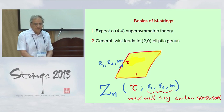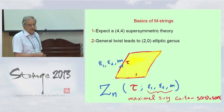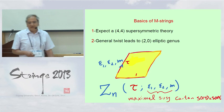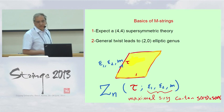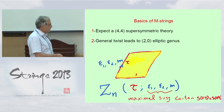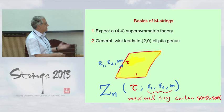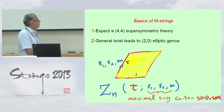So this is basically the computation. We use the topological vertex formalism, compute the answer, and the question is what does this teach us about M-strings. We expect a (4,4) supersymmetric theory: without the M5 brane to end on, the M2 brane has 16 supersymmetries; with the boundary we get half, so (4,4) SUSY — not a surprise. If we do the general twists compatible with preserving supersymmetry, we end up computing the (2,0) elliptic genus. The extra parameters correspond to breaking the SO(8) symmetry into directions that preserve supersymmetry; the result depends on τ — the complex structure of the M-string — and these twist parameters.